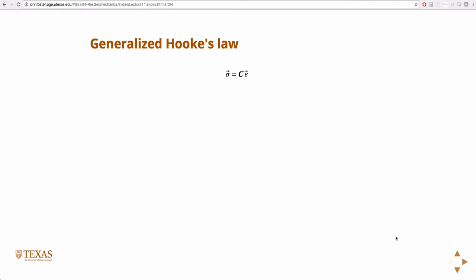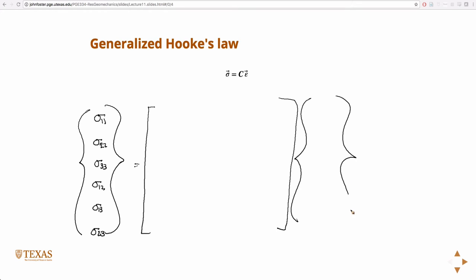And so I'm going to write down a vector now of the unique stress components, right? So sigma 1-1, sigma 2-2, sigma 3-3, sigma 1-2, sigma 1-3, sigma 2-3. And so,